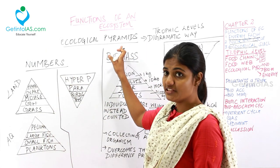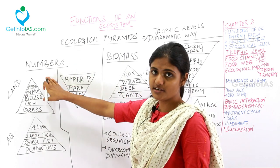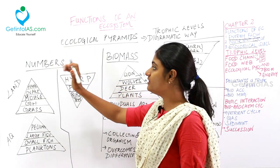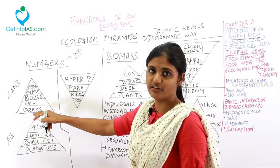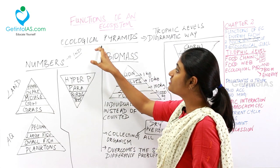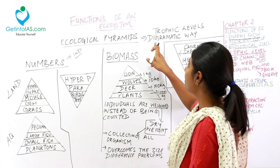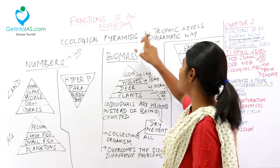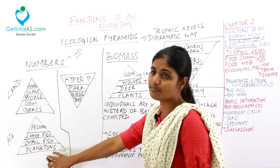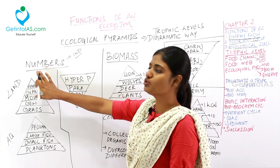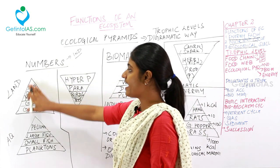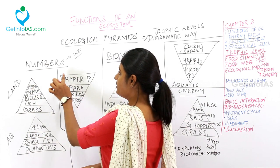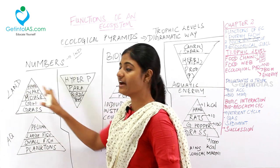Under ecological pyramids, there are three subheadings: pyramid of numbers, pyramid of biomass, and pyramid of energy. An ecological pyramid is the representation of various trophic levels in a diagrammatic way. In the pyramid of numbers, the diagrammatic representation can be upright as well as inverted.